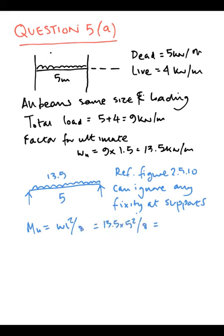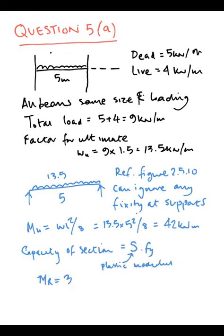In Figure 2.5.10, we can ignore any fixity at the support, so we calculate the moment WL²/8, which is 42 kN·m. The capacity of this section is the plastic modulus times the yield stress: 275/1000 × 393, which gives 108 kN·m. This is greater than the applied bending moment of 42, which means the beam is sufficient size.